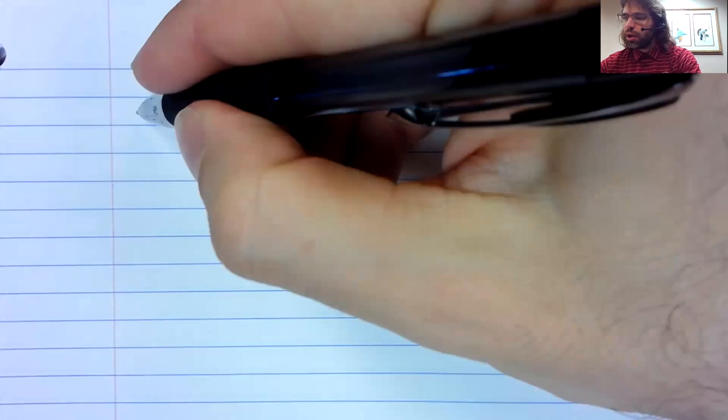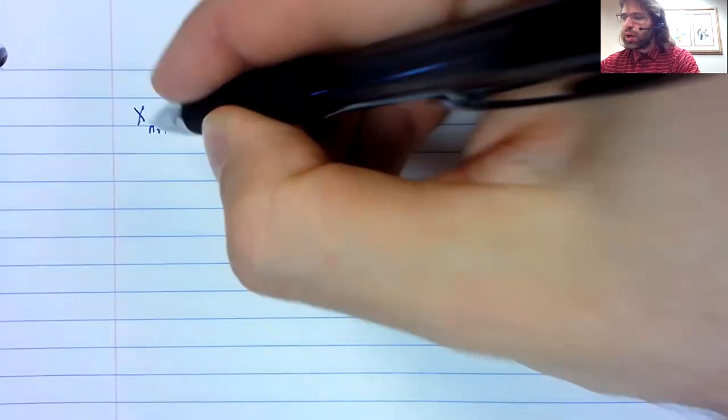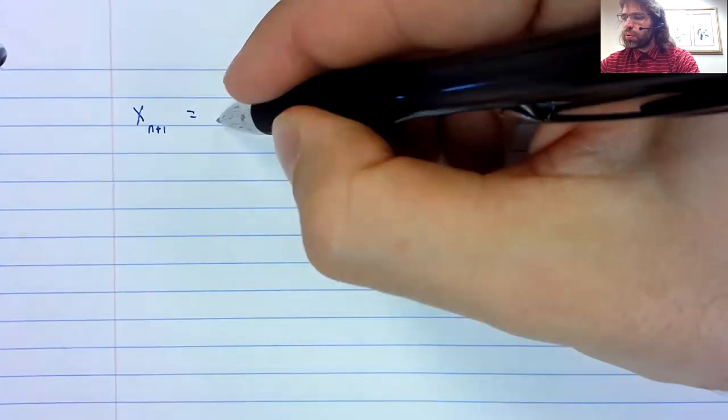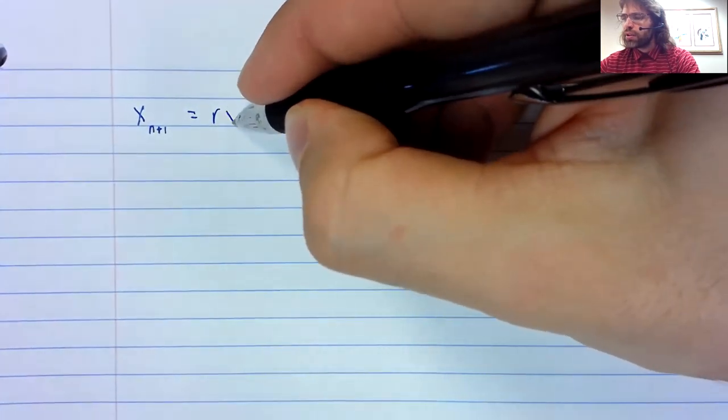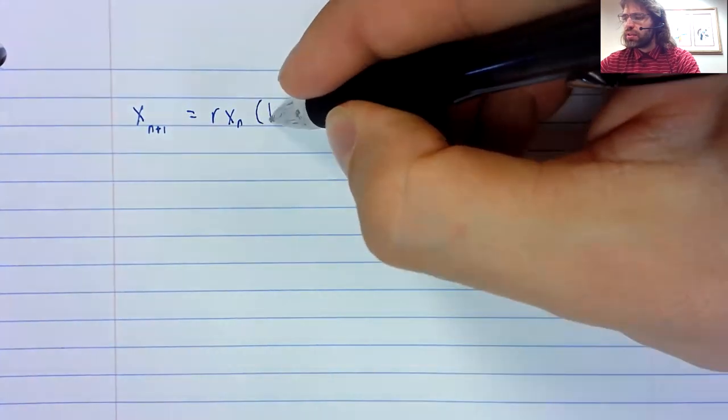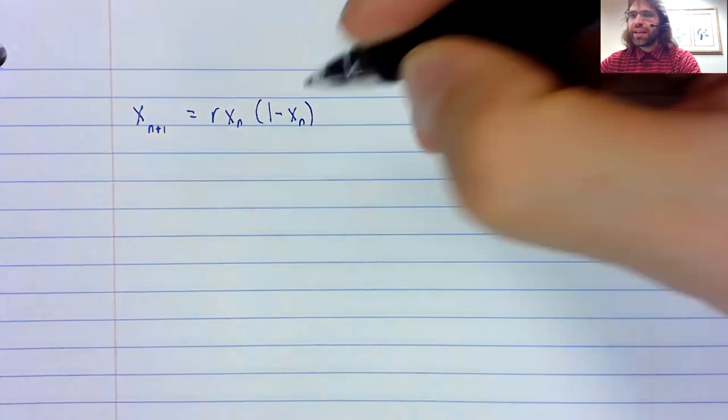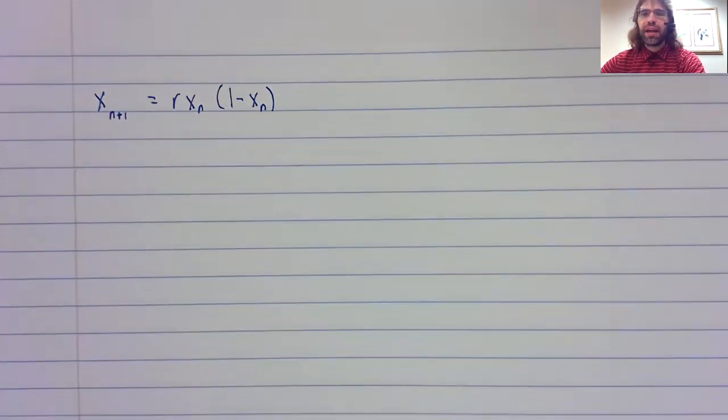The logistic model is x sub n plus one equals r times x sub n times one minus x sub n.